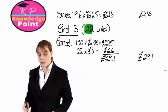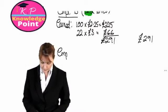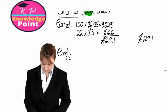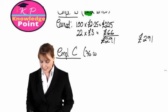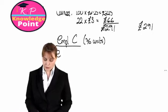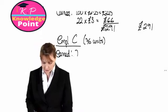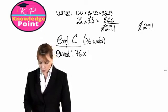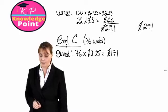Finally, moving on to employee C. Employee C has produced 76 units. They're below the threshold of 100 units, so the lower rate of £2.25 will apply to all units. So 76 by £2.25 gives us £171.